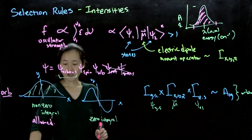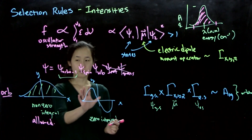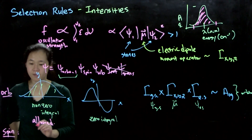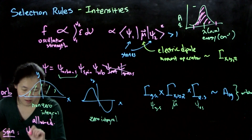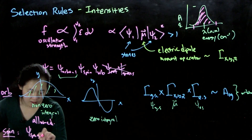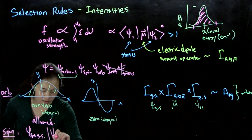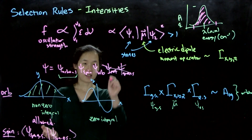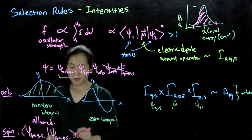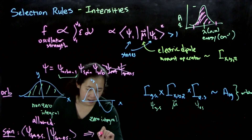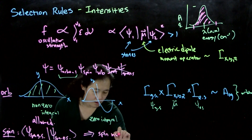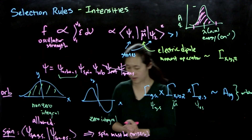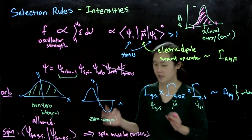For the spin component, the electric dipole moment operator does not operate on spin. So for spin, what we need is that the spin wave function of the ground state times the spin wave function of the excited state gives a non-zero integral — meaning spin must be conserved. This is the spin-allowed condition. So: orbital symmetry allowed, and spin allowed are the two criteria.